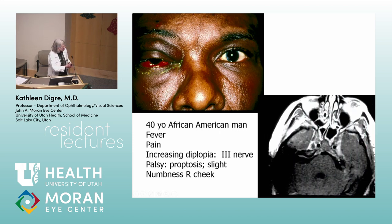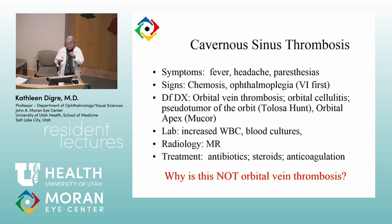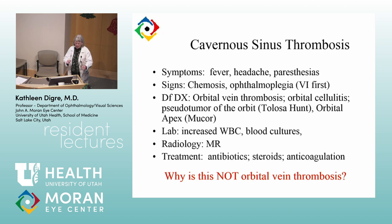We imaged him and found bilaterally widened cavernous sinuses — really wide. Here are his carotid arteries. He had cavernous sinus thrombosis. Features include fever, headache, paresthesias, often chemosis, often V1 involved but can be V2. Orbital vein thrombosis could look similar, but what differentiates cavernous sinus thrombosis from orbital vein thrombosis? Trigeminal involvement — that's the key piece. You also have to think about Tolosa-Hunt, mucor, and orbital apex syndrome.